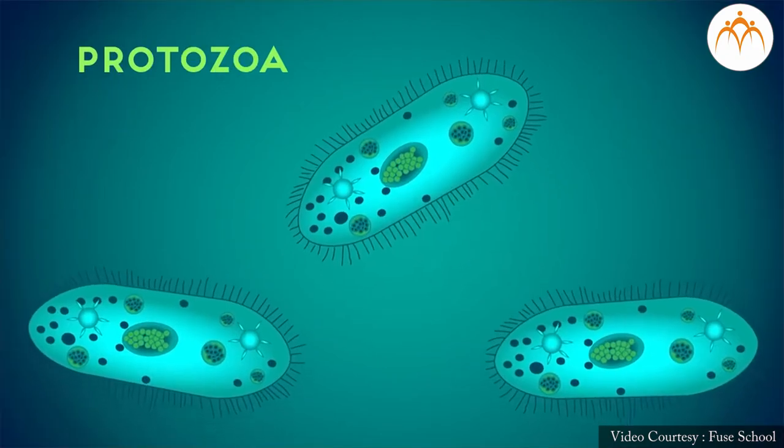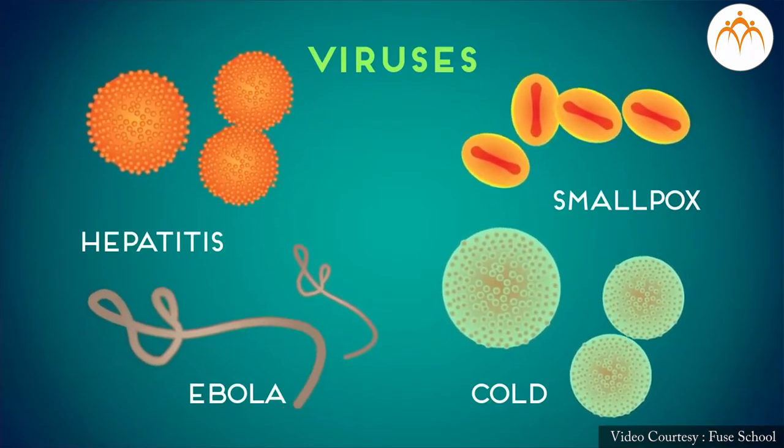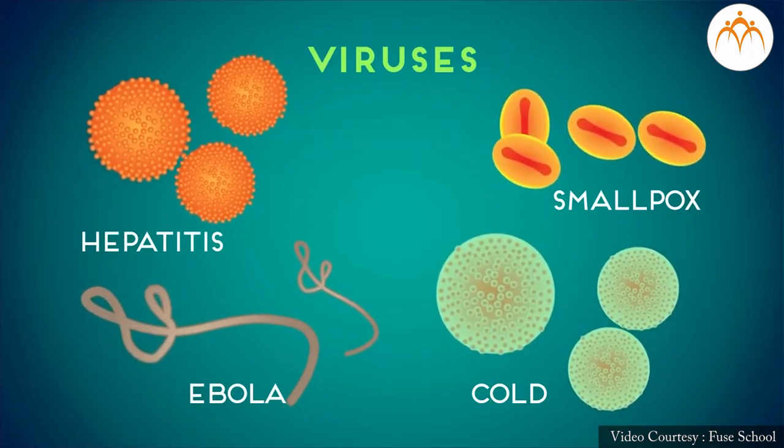Hence, it is easier to study about them by classifying them into specific groups having similar properties. The branch of biology that deals with the detailed study of microorganisms is termed as microbiology. Microorganisms present around us may belong to one of the following categories: bacteria, protists, fungi, or algae. There is one more unique category — viruses — which are microscopic acellular entities capable of producing more copies of themselves only after infecting living cells. Their detailed study is termed as virology. We will focus on the first four groups during this session.